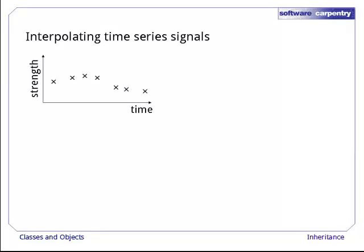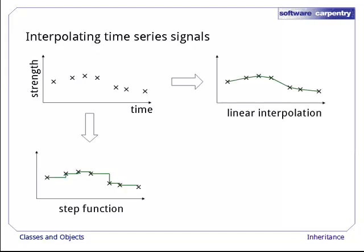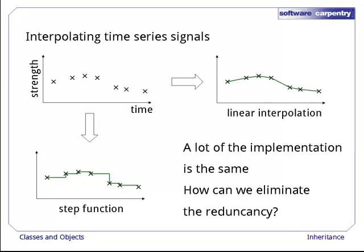Let's take another look at the example from our previous episode. We were given a signal that had been sampled at irregular intervals, and we built classes to do stepwise and linear interpolation in a way that let us use one or the other, or yet another class that we haven't written yet, in the rest of our program. A lot of how we implemented those two classes was the same. How can we eliminate the redundancy so that there's no duplicated code in our program?